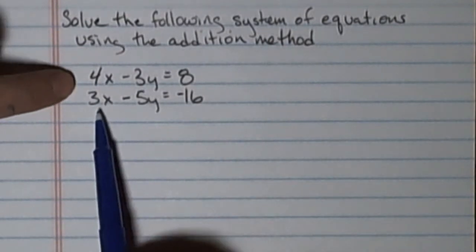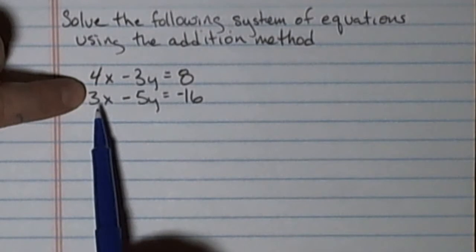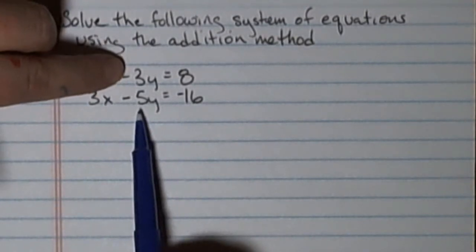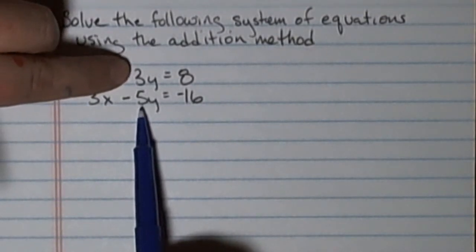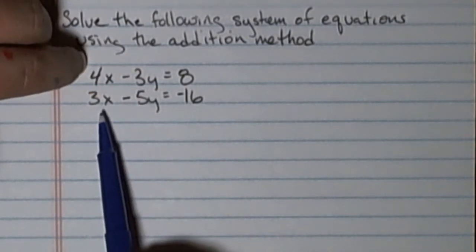When I look at them I can either work with the x terms. I'm looking for the smallest common multiple of 3 and 4, and that would be 12. So I could get 12 as my x coefficients, or I can go to my y's and the smallest common multiple for 3 and 5 would be 15. So I could either work with my x's or y's.